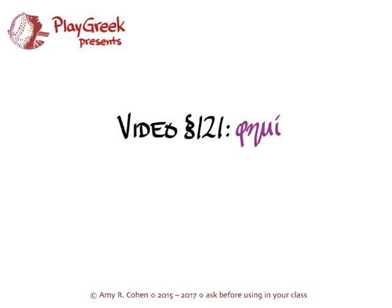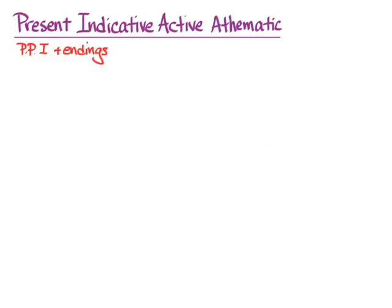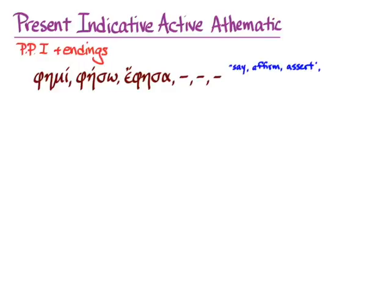In this video I get to introduce you to the verb φημί, which Hanson and Quinn introduces you to on pages 461 and 462. This verb is actually a mi verb, it's an athematic verb, and we're going to look at it with the usual rules most of the time. It's really only unusual in the first principal part which is a mi verb. φημί means say, affirm, or assert.